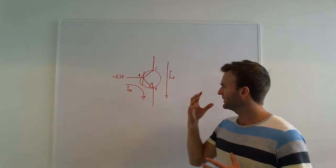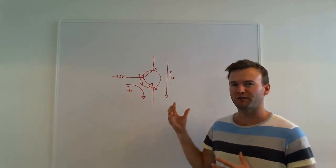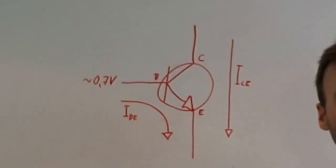This is a standard, very common, bipolar junction transistor. It's the NPN type. And it works like this.